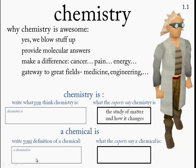Now here, write what you think a chemical is. And here we're going to put what the experts say. What the experts say is that a chemical is simply a pure form of matter, also known as a substance. So it's a very broad definition.